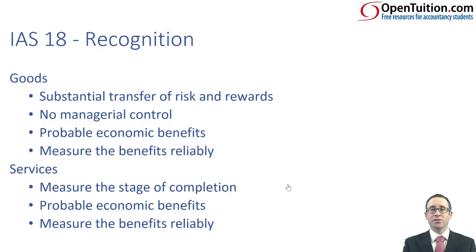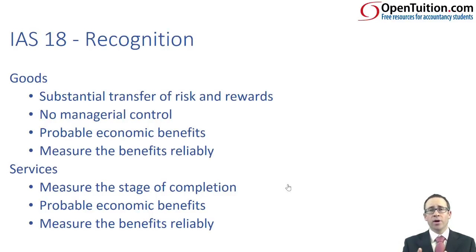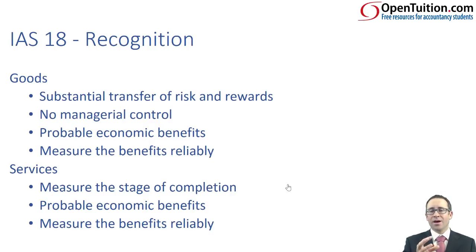With regards to services, measuring the stage of completion was problematic — there was no detailed guidance on how complete your service was. So if you were providing a warranty service or a repairs and maintenance service over one, two, or three years, how do you recognise that revenue on a stage of completion basis? There were various different measures that could be used, none of which ensured comparability and consistency amongst entities — which is one of the enhancing qualitative characteristics. So parts of IAS 18 didn't necessarily follow directly what we had from the framework.